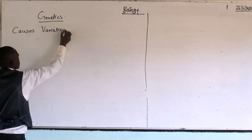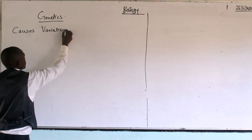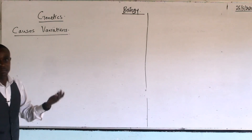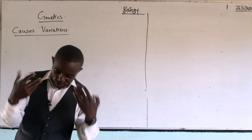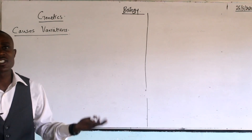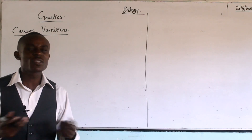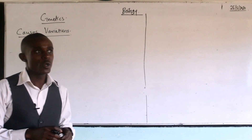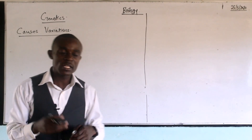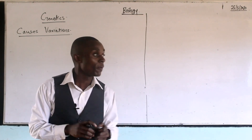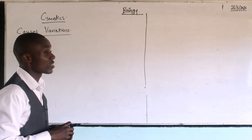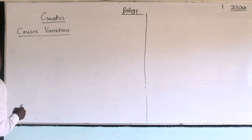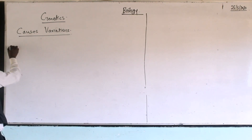Even if you look at your neighbor, or look at a family, people don't look similar. Perhaps you are asking yourself: why is it that we came from the same parents and yet we are not similar? The traits differ and distinguish one person from another. So we want to see what actually causes variation in living things.